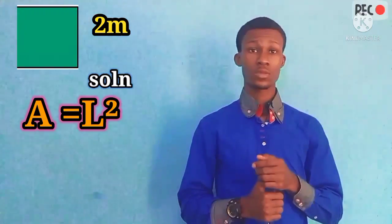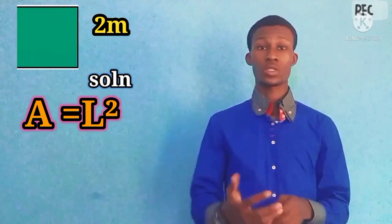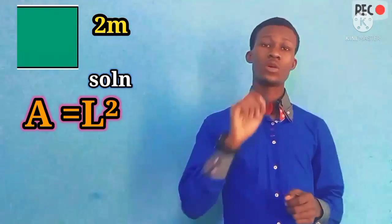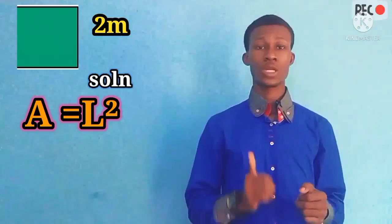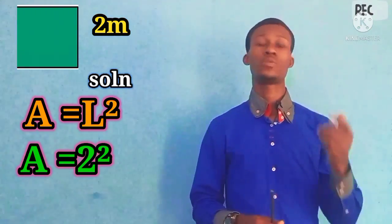For instance, if a shape like this square is given to you and you want to find the area, knowing that one side is 2 centimeters — how do we find it? You begin with your solution: write Area equals L squared. The L in this question is 2, so you write 2 raised to the power 2, which gives us 4. So the area is 4.